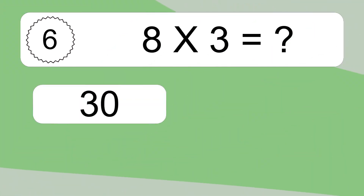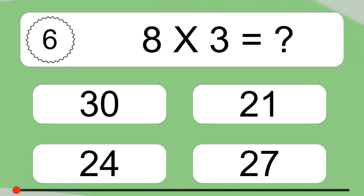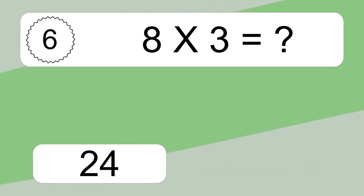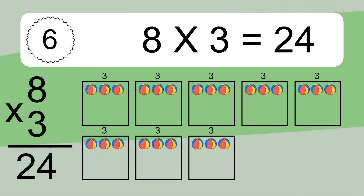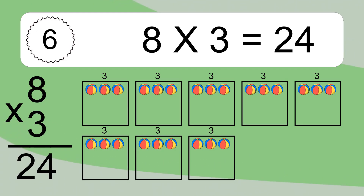8 times 3 equals what? 8 times 3 equals 24. We have 8 boxes, and each box has 3 colorful balls inside. If you count all the balls in all the boxes together, you will have 8 times 3 balls. This equals 24 balls.